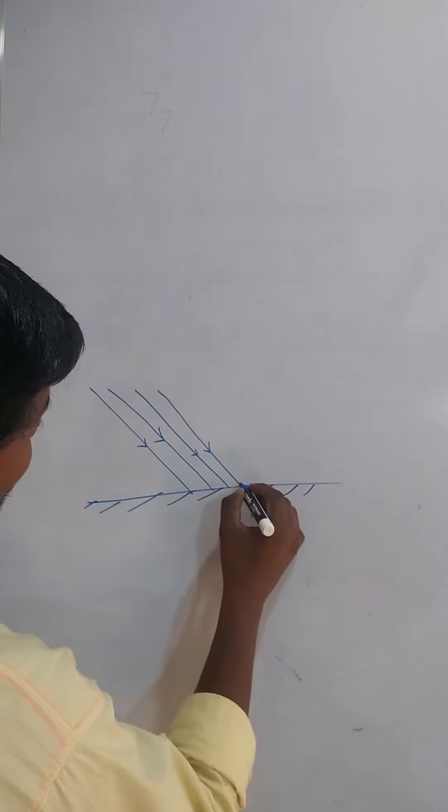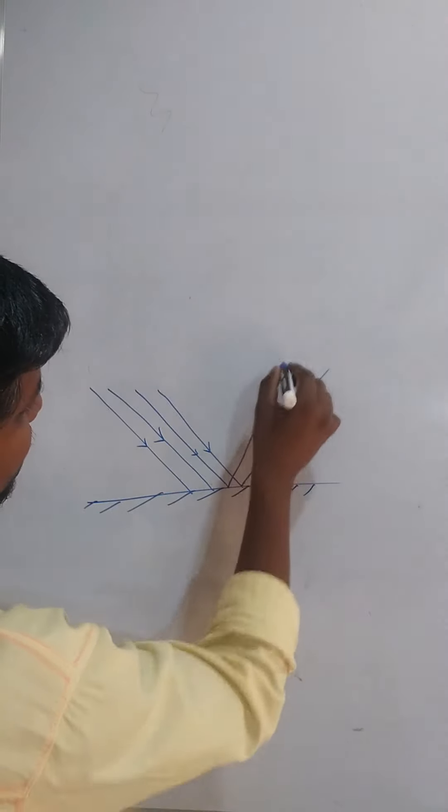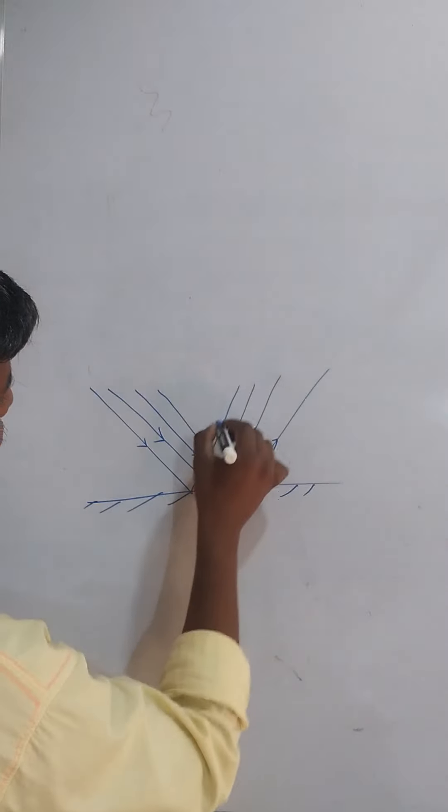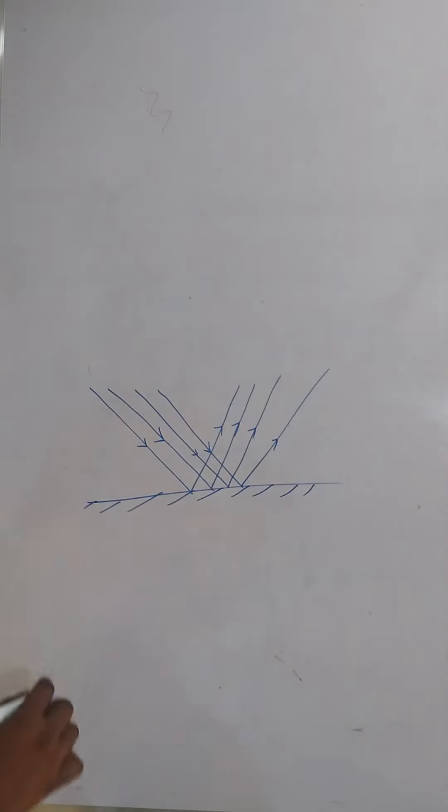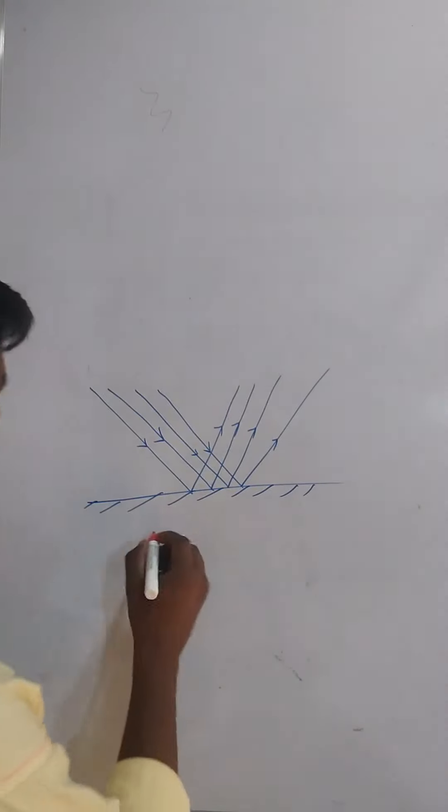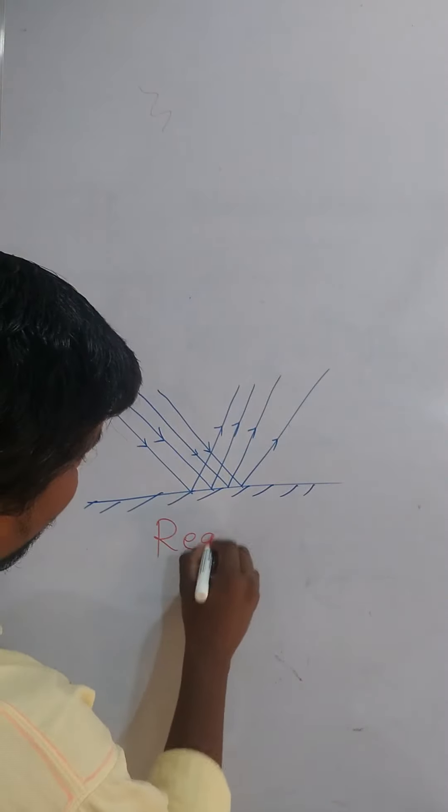Then the reflected beam, so the reflected light rays are also parallel to each other. Then this type of reflection is called regular reflection. So what is this type of reflection called? Regular reflection.